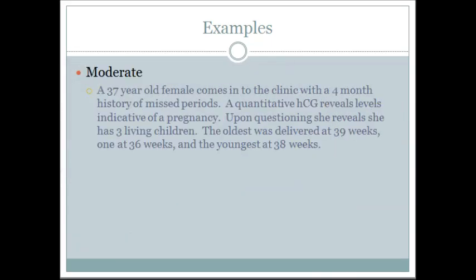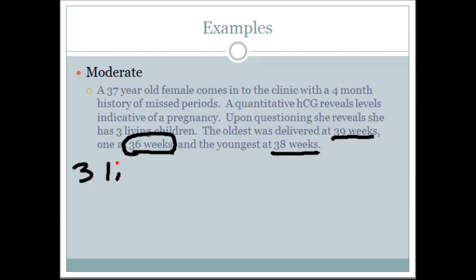Now we're into the moderate difficulty range. A 37-year-old comes to your clinic with a four-month history of missed periods. A quantitative HCG reveals levels indicative of pregnancy, so she is pregnant right now. She reveals that she has three living children. The oldest was delivered at 39 weeks, the middle child at 36 weeks, and the youngest at 38 weeks. The middle one was born preterm, since 36 is less than 37. The other two were born at term. She is currently pregnant.